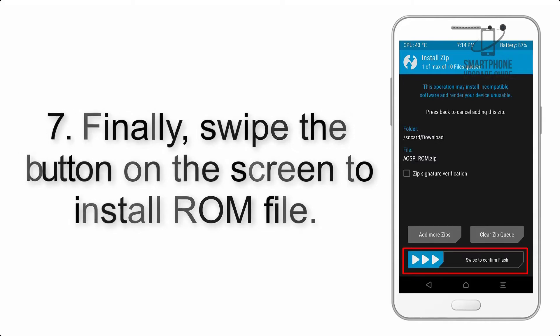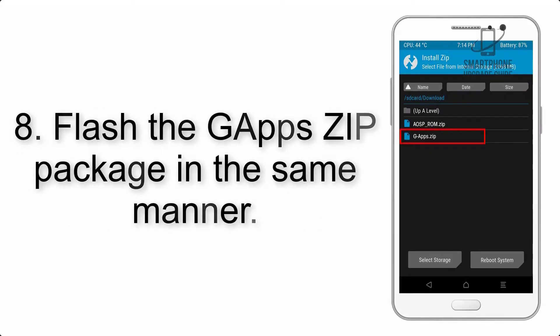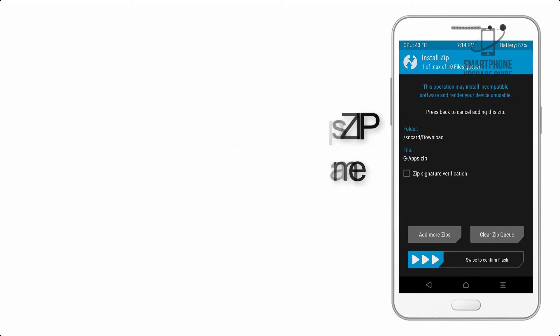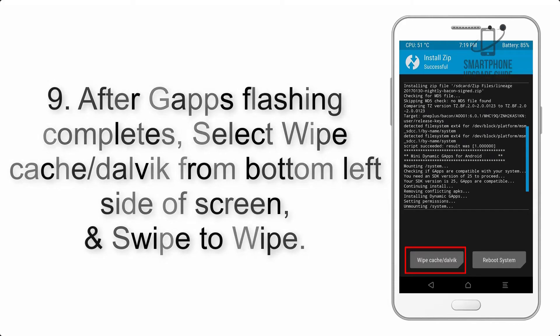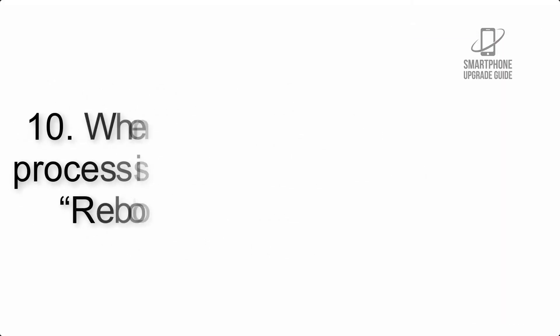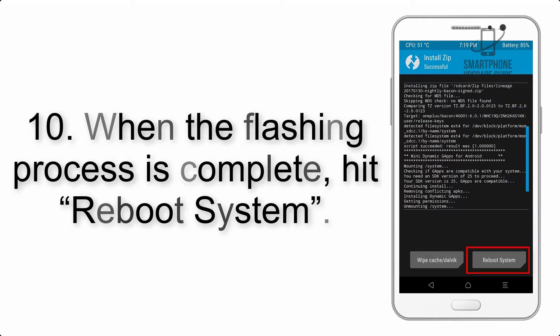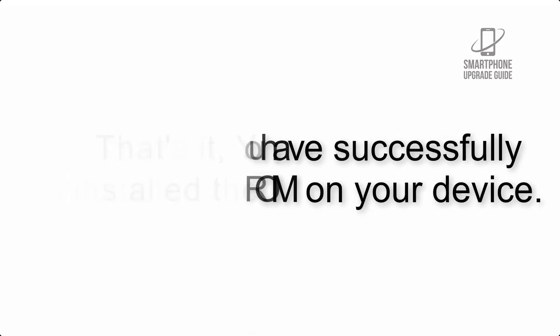Step 8: Flash the GApps zip package in the same manner. Step 9: After GApps flashing completes, select Wipe Cache and Dalvik from the bottom left side of the screen and swipe to wipe. Step 10: When the flashing process is complete, hit Reboot System. That's it — you have successfully installed the ROM on your device.